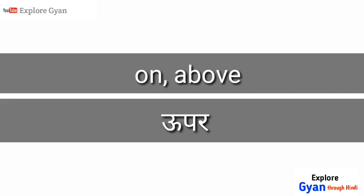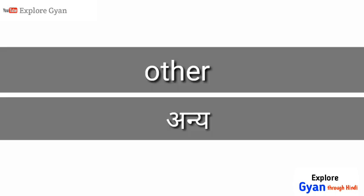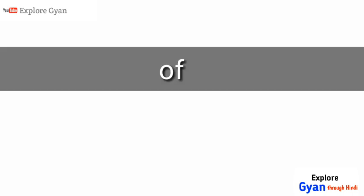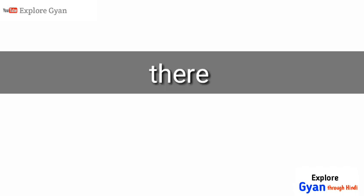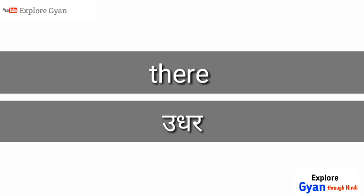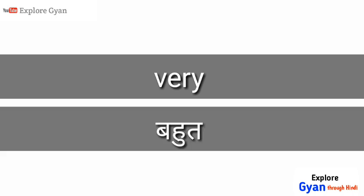'Above' means upar. 'Other' - anya. 'There' - udhar. 'Very' - bahut.